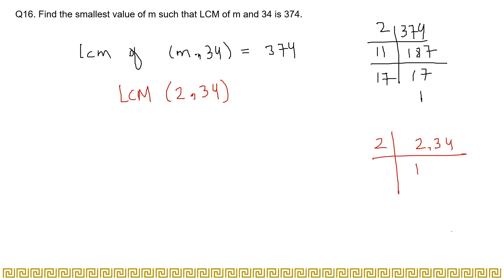2 and 34. Factoring: 2 into 2, 2 into 17. Now see, 2 multiplied by 17 gives you 34. But here we have 374. This gives us 34. That means this is not our required value for m.